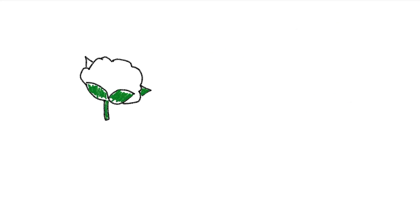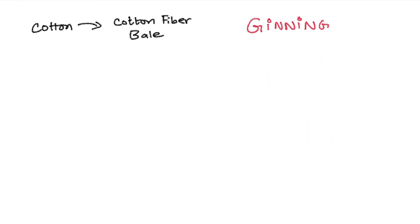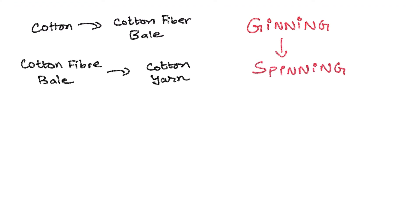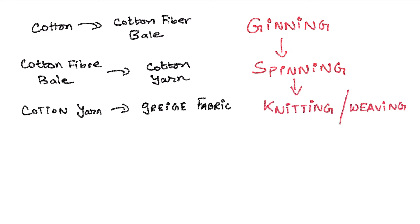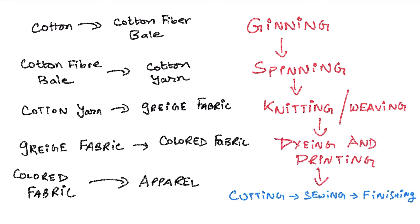This is a very simple overview of the processes involved in turning cotton fiber into apparel. Cotton is converted to cotton fiber bale by ginning. Cotton fiber bale is converted to cotton yarn by spinning. Cotton yarn is converted to gray fabric by knitting or weaving. Gray fabric is colored by dyeing and printing. The colored fabric is transformed into apparel or garment by cutting, sewing and finishing.